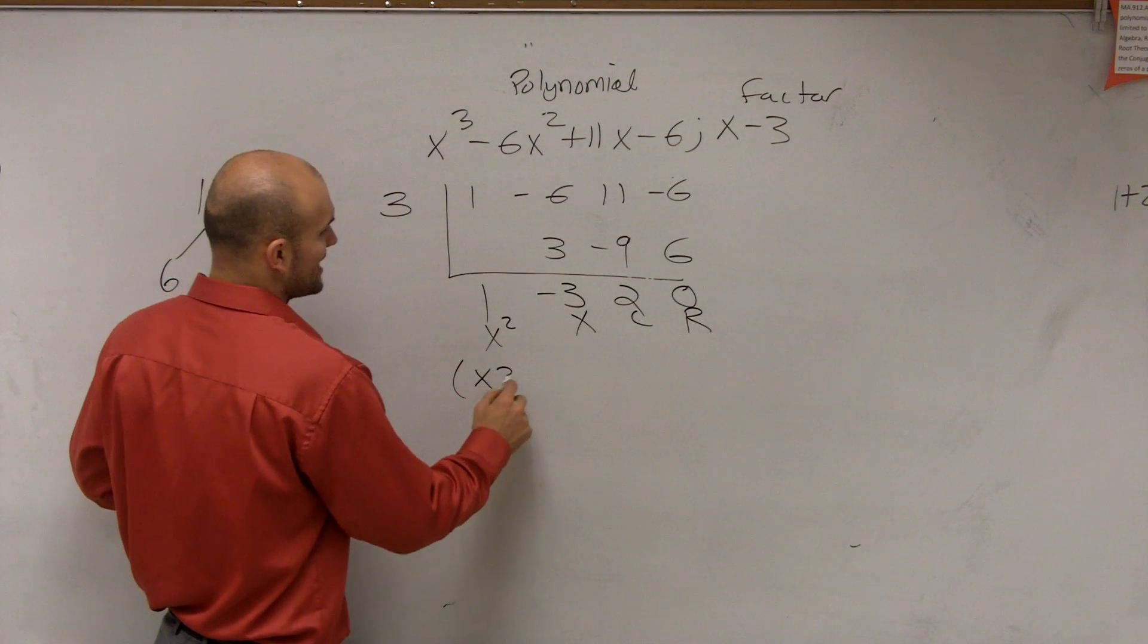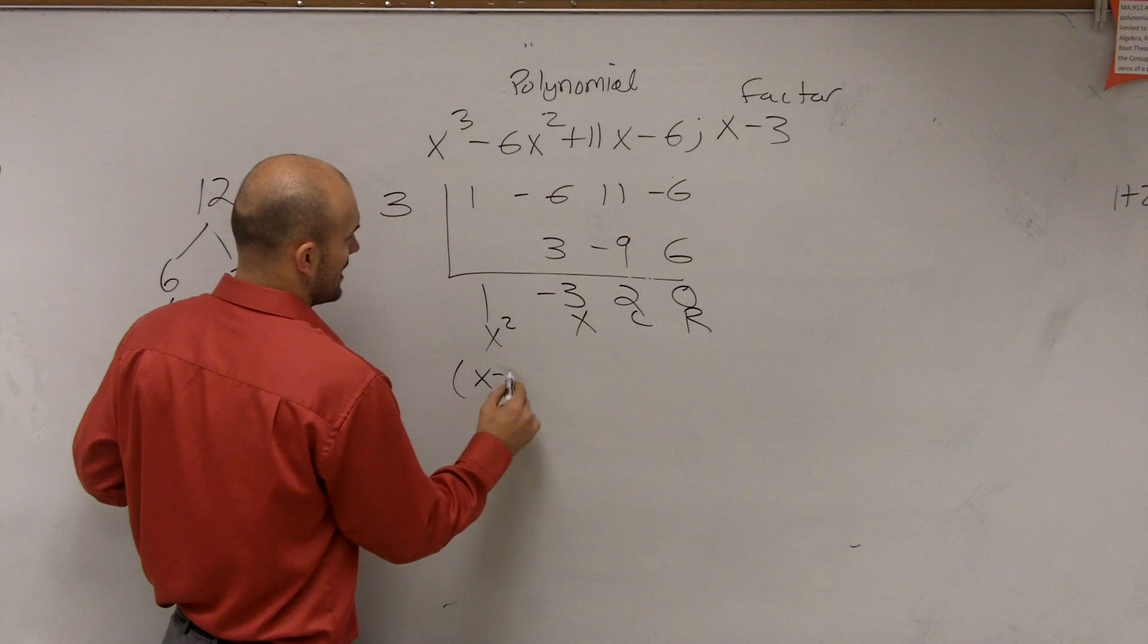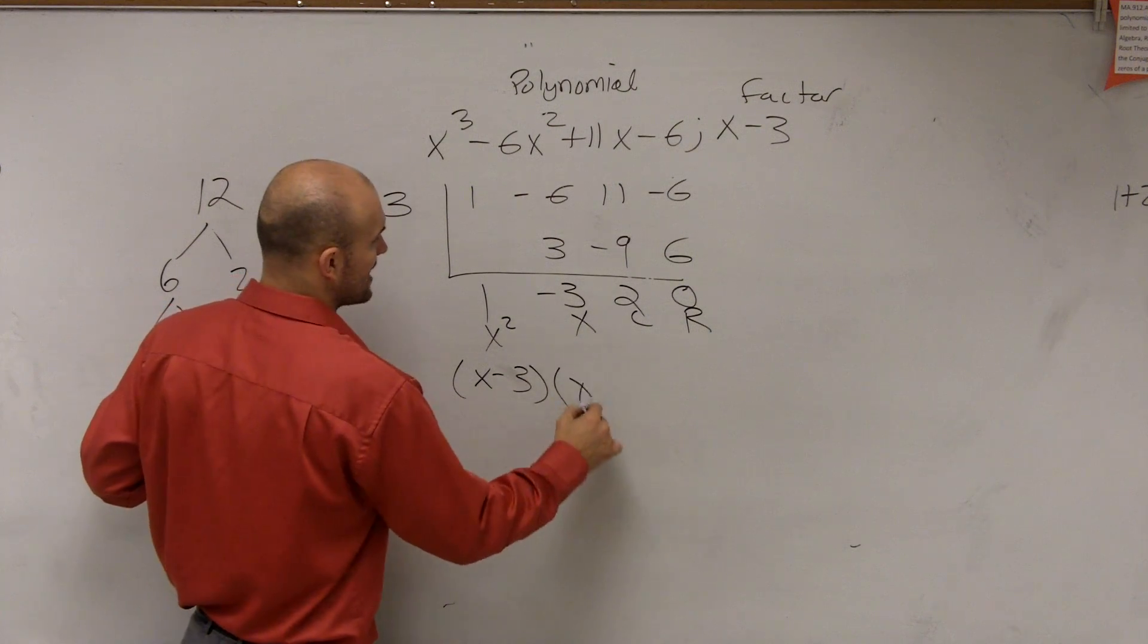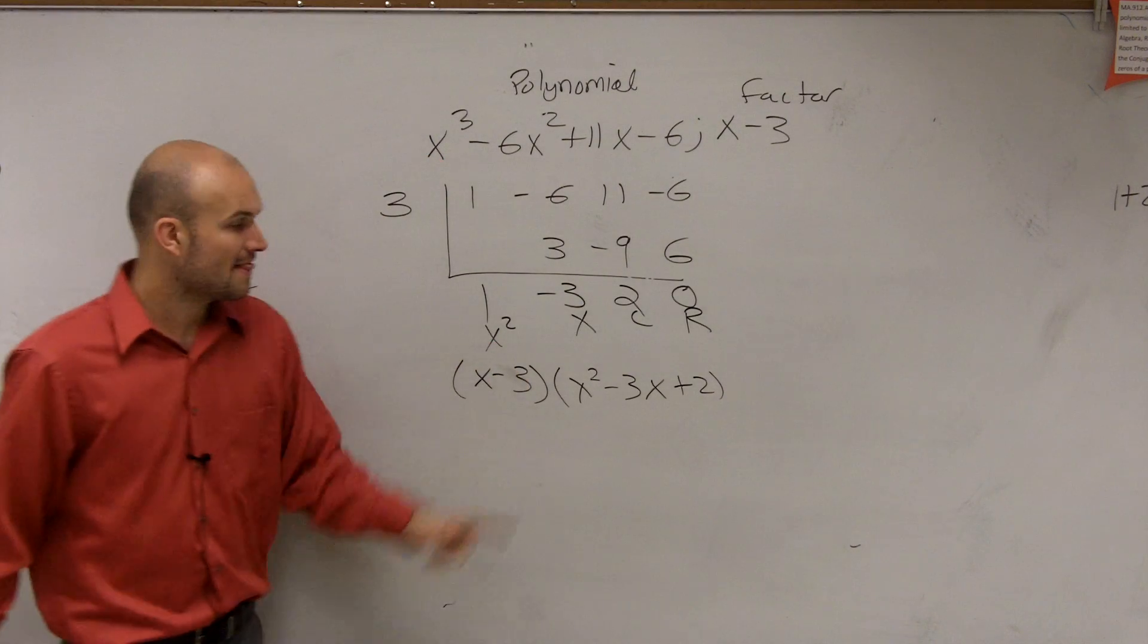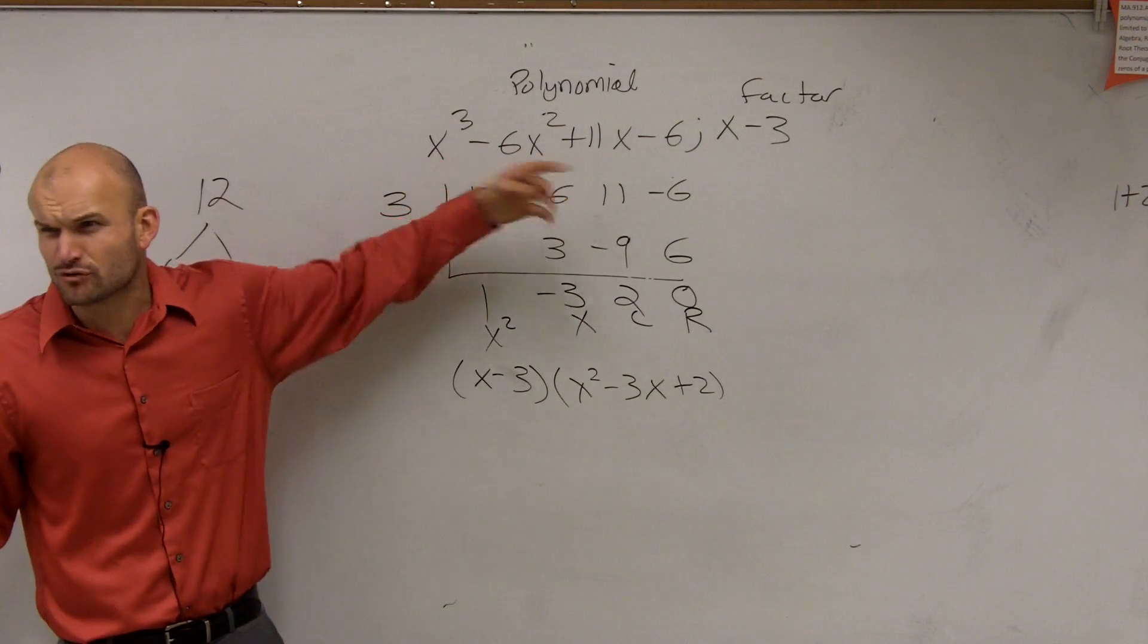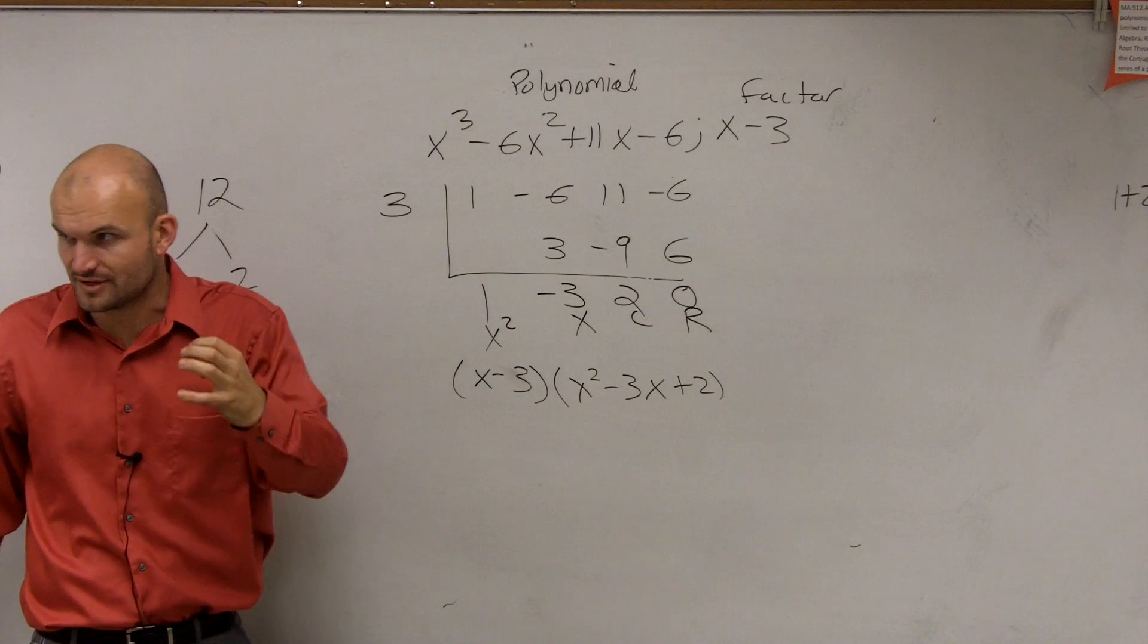So now I could say x minus 3 times x² - 3x + 2. This times this equals that. Does everybody agree with now kind of the understanding of this?